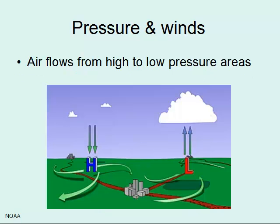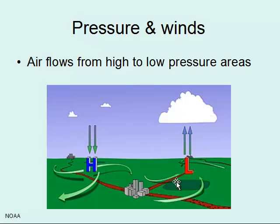Because of these differences in pressure, we have air sinking around high pressure areas and rising at low pressure areas. Along the surface of the Earth, we end up having air flowing from the high pressure to the low pressure zones.